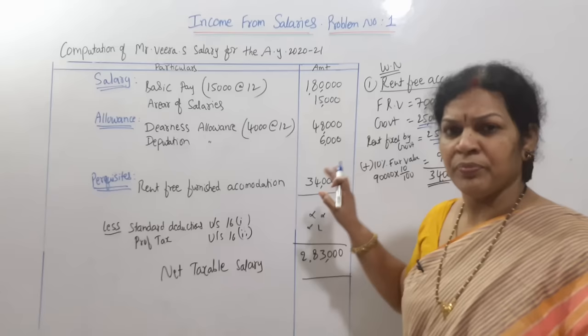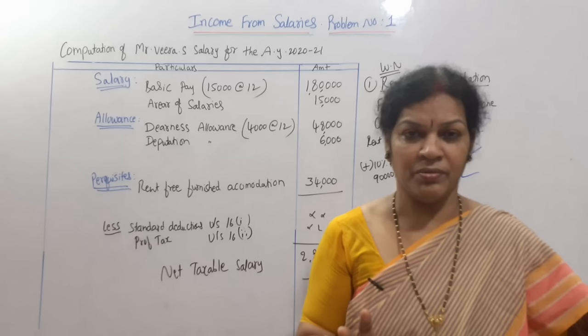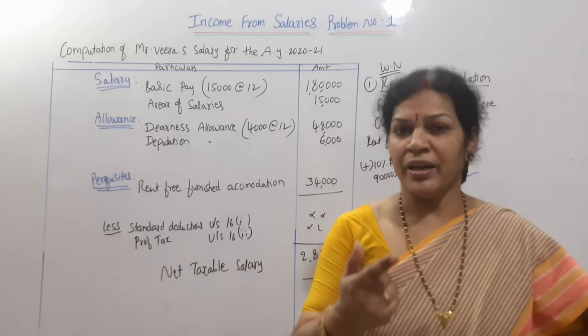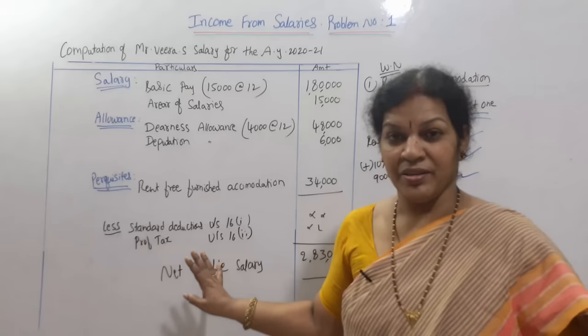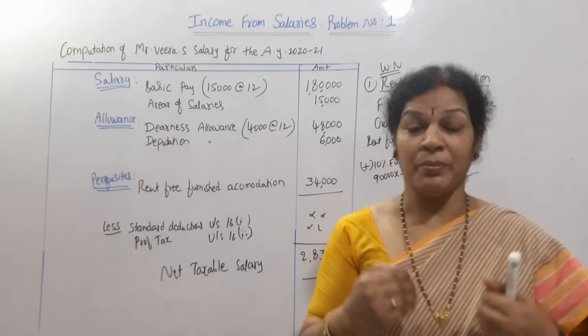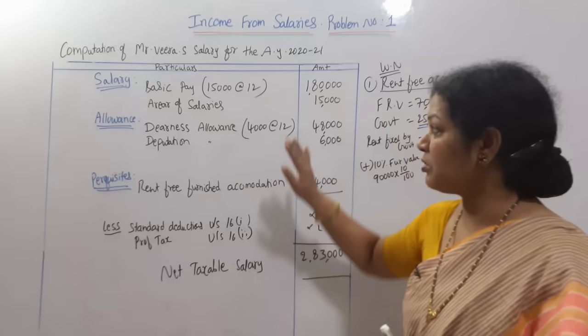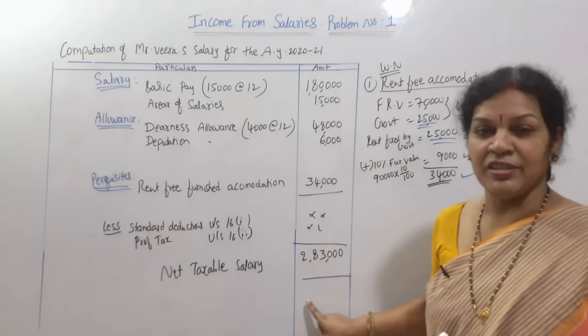Employer and self-contributions to State Provident Fund are exempted — not taken in income from salaries calculation. Interest on SPF at 12% is also fully exempted. Medical reimbursement from a recognized hospital is also exempted — no tax at all. No professional tax paid and no profit deductions, so net taxable salary remains ₹2,83,000.